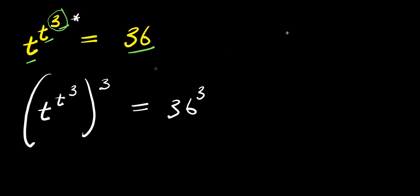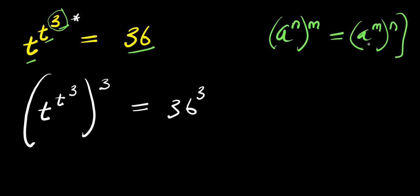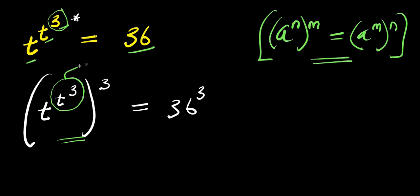Now, the next step we are going to take will be to apply this identity: a to the power of n, raised to the power of m, equals a to the power of n times m. We apply this identity here. In this case, t power 3 will represent our base exponent, while the 3 will represent our outer exponent. That means the inner exponent will come inside the bracket and the outer exponent will go outside the bracket.